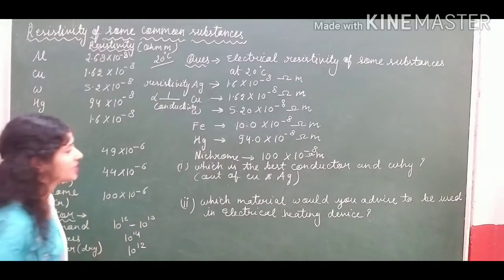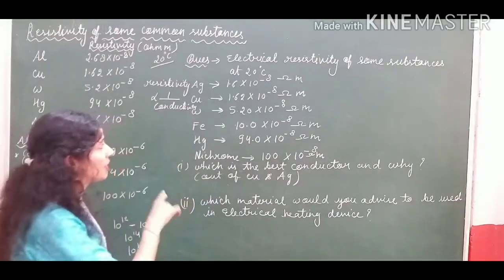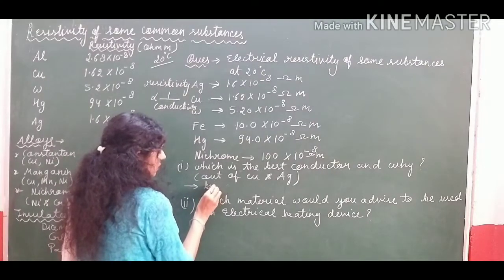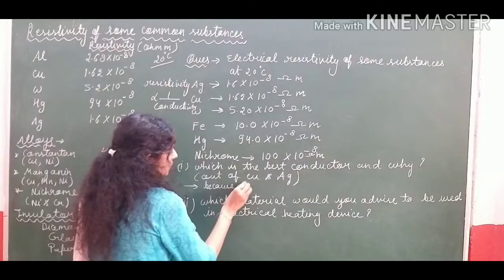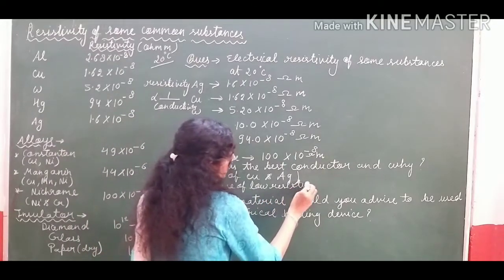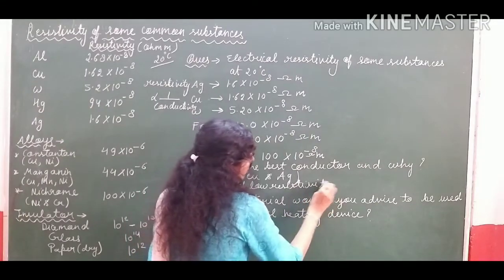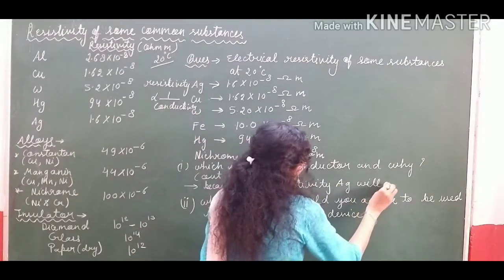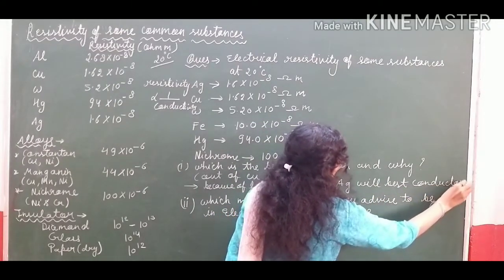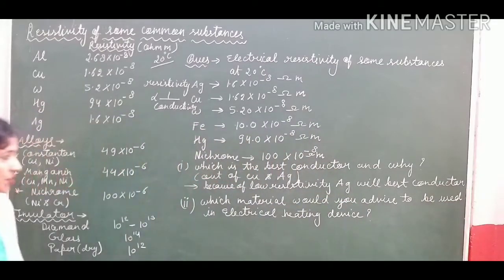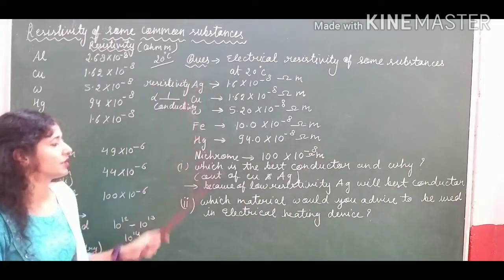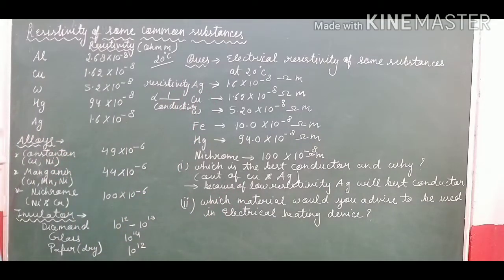Silver will be the best conductor when we compare copper and silver, because of its low resistivity. Ag will be the best conductor. And everybody knows that silver is the best conductor of electricity. The relation is: higher the resistivity, lower the conductivity; lower the resistivity, higher the conductivity.